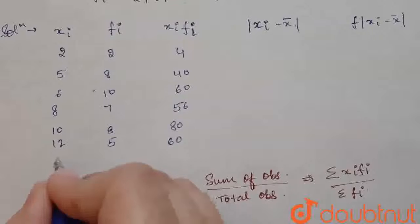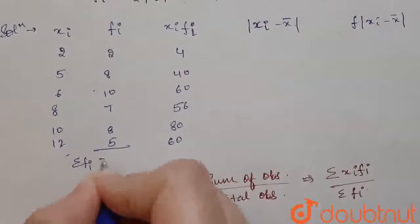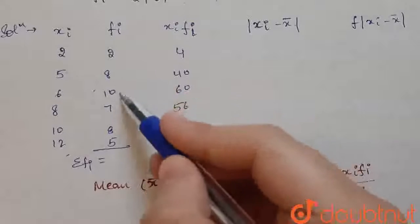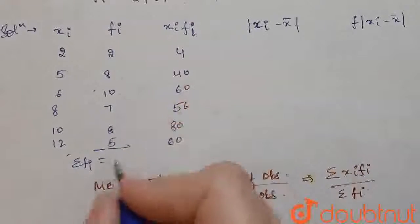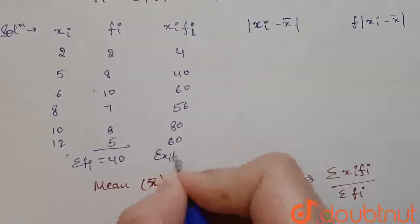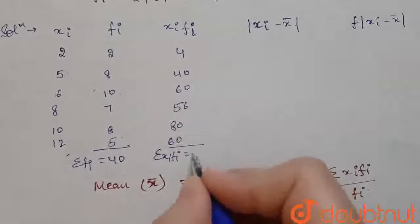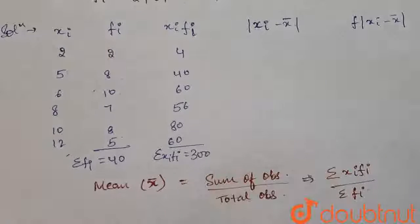So, summation of fi from here we are going to calculate. Summation of fi is equal to 10, 20 and 40. And summation of xi fi is equal to the sum of this. The sum of this data is 300.